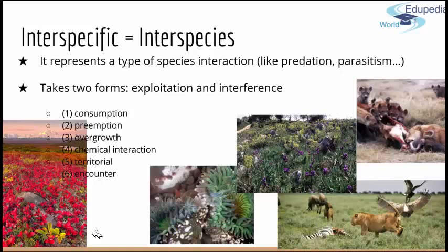Interspecific competition can be done in two ways: through exploitation or interference. Both of these can be done in six levels. Consumption competition occurs when individuals of one species inhibit individuals of another by consuming a shared resource, such as the competition among various animals for acorns.